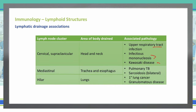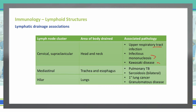The next lymph node cluster is the mediastinal lymph node. This is around the trachea and the esophagus, and it is paired together with the hilar lymph nodes, which are near the lungs in the middle of the body. The mediastinal and hilar lymph nodes are associated with pulmonary TB and hilar lymphadenopathy, sarcoidosis, primary lung cancer, and granulomatous disease.